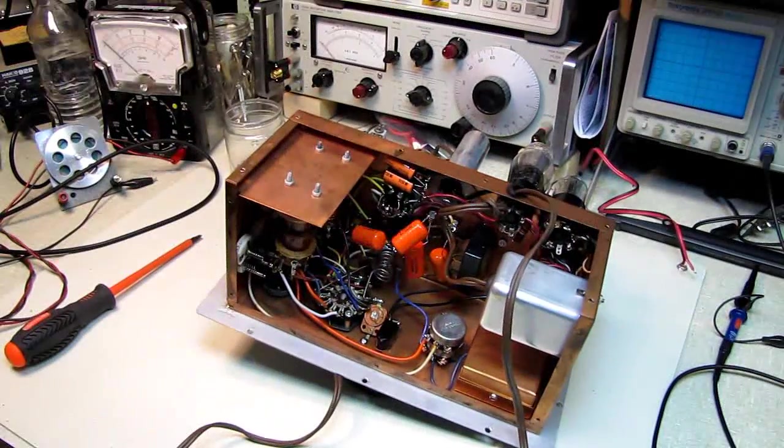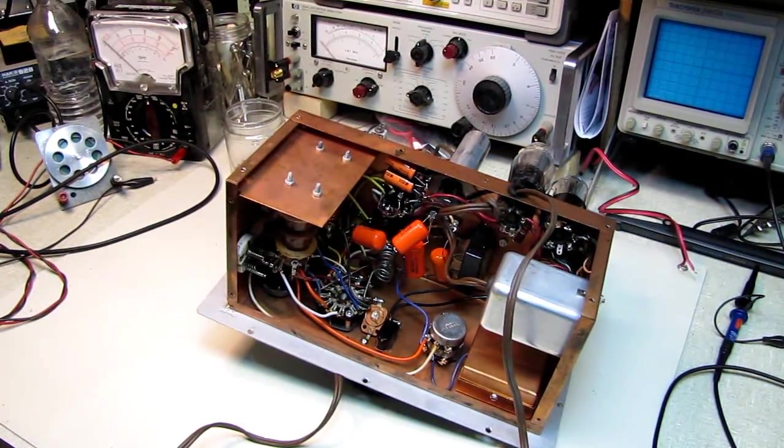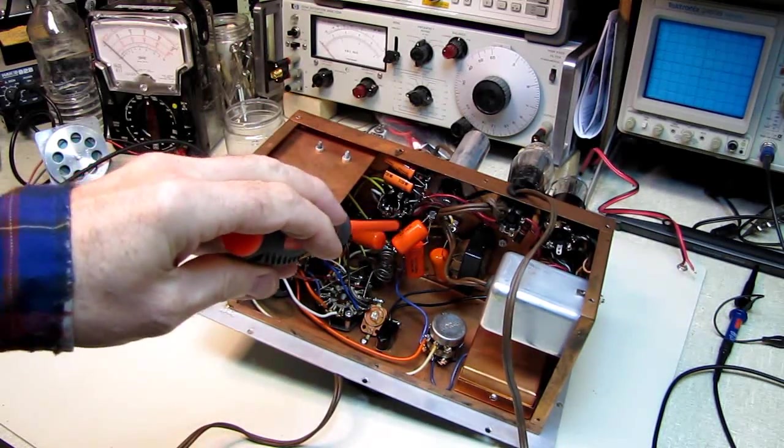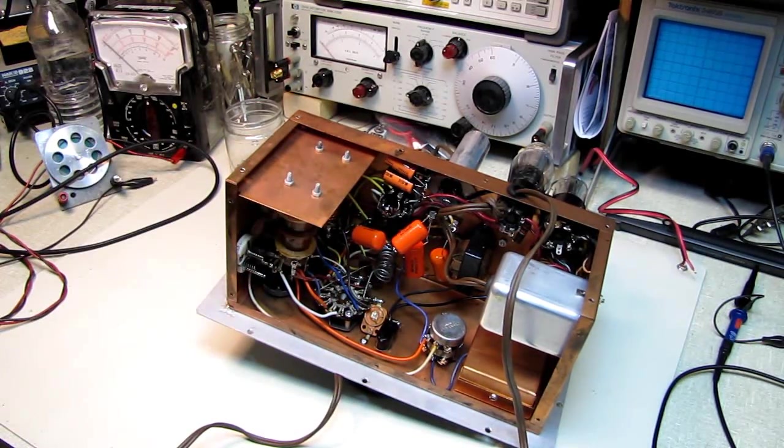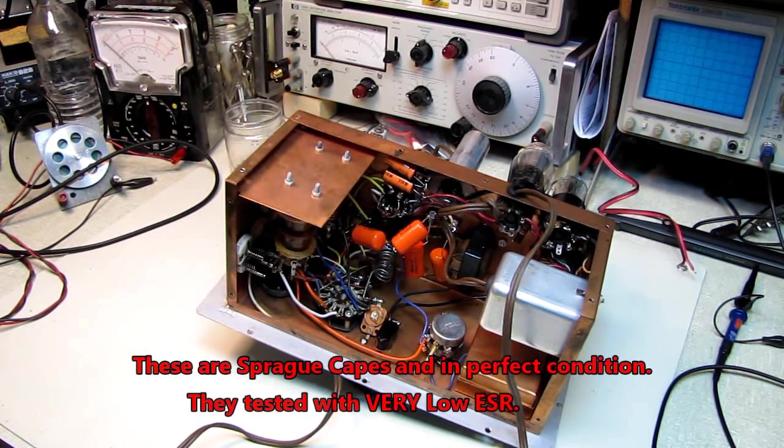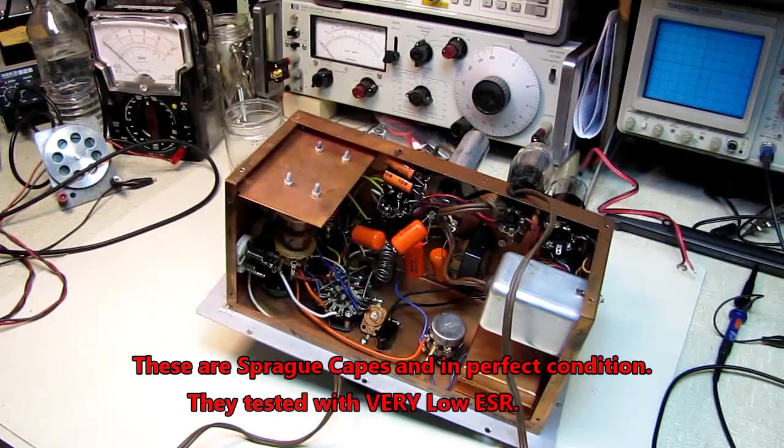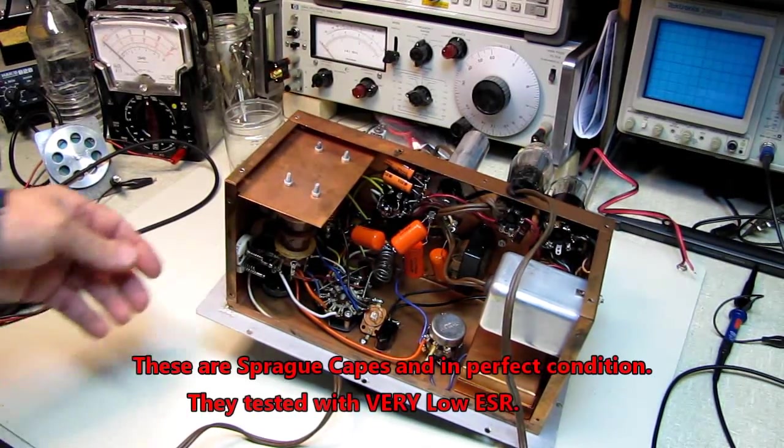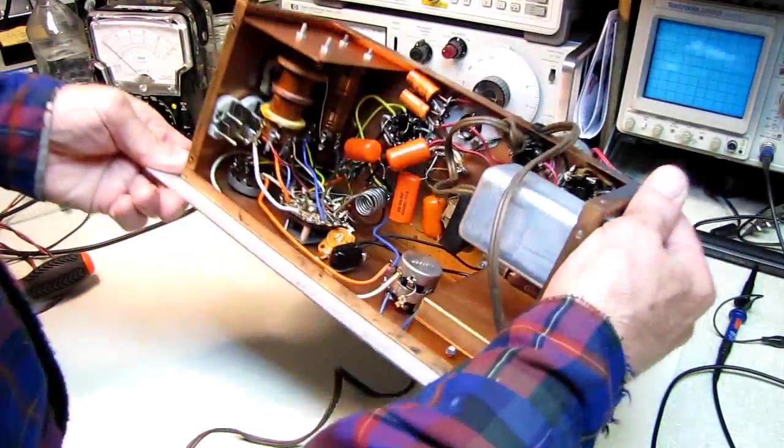There's a pleasant surprise. I popped the bottom cover off and somebody has already recapped this. It's got orange drops where the paper caps used to be and a couple of fairly modern electrolytics. We'll run a test on those, check the ESR and make sure they're still up to snuff.